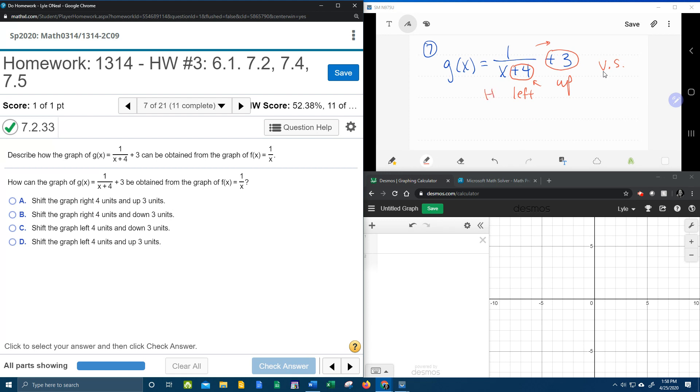So we have a horizontal shift and we have a vertical shift, up 3, left 4.